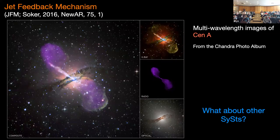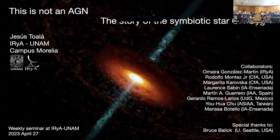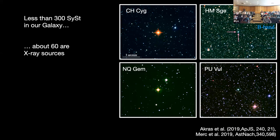What about other symbiotic stars? In our galaxy there are about 300 symbiotic stars, and only about 60 of them have X-ray emission. These are optical images of four examples of symbiotic stars taken from the Digitized Sky Survey. On the left panels, the symbiotic stars in the middle are red — dominated by emission from the red giant star. On the right panels, they're bluish or yellowish — dominated by emission from the white dwarf.